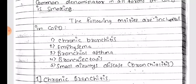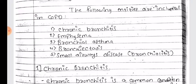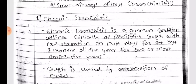The following entities are included in COPDs: chronic bronchitis, emphysema, bronchial asthma, bronchiectasis, small airway disease, and bronchiolitis.